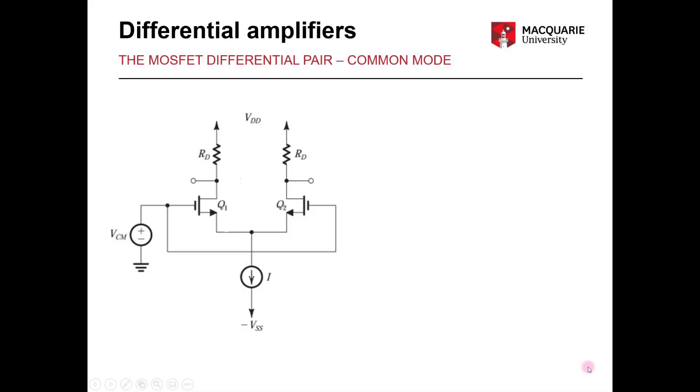So we've shown that our MOSFET differential pair does not respond to common mode inputs. But this relies on certain conditions which will limit the range over which that is true. So our common mode voltage VCM has upper and lower limits which we will derive in this part of the video. This is known as the input common mode range.